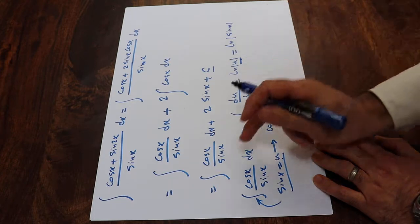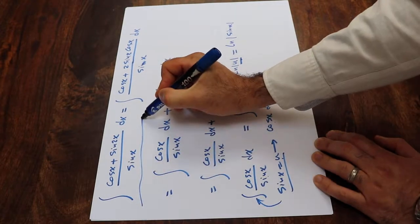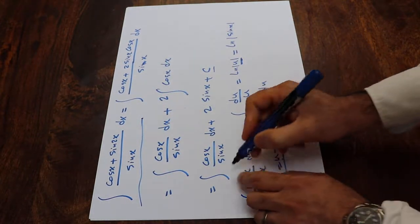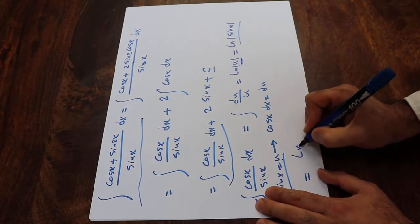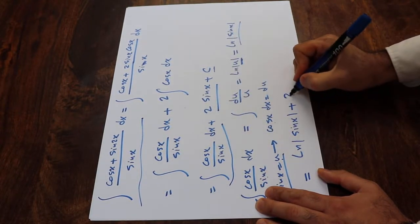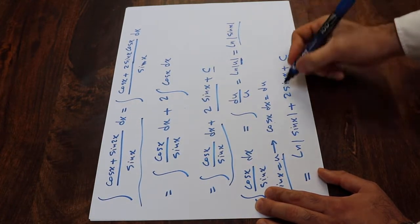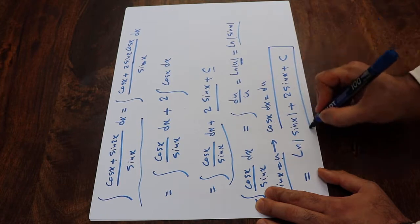This is the solution of this integral. So, the original integral, which was this one, therefore, the answer will be equal to this integral, which we just calculated, that is ln sine x plus the second term, that is 2 sine x plus c, which is the constant of the integral. And that is the solution to our integral.